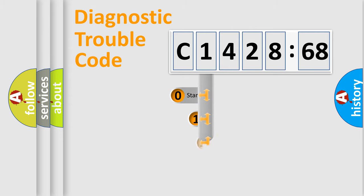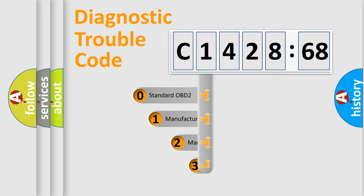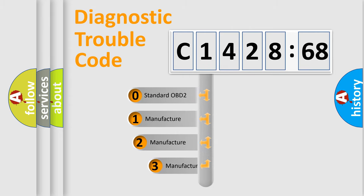Powertrain. Body. Chassis. Network. This distribution is defined in the first character of the code.